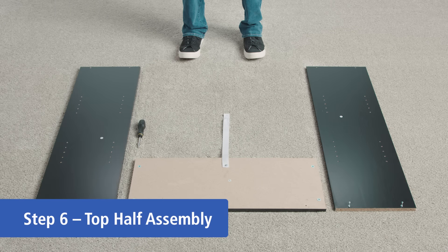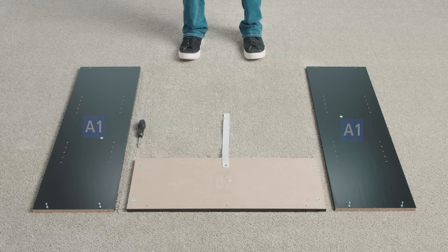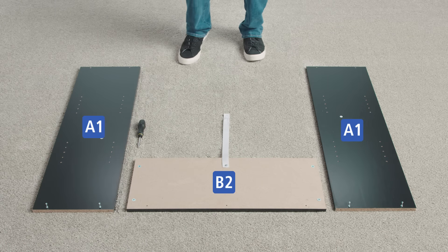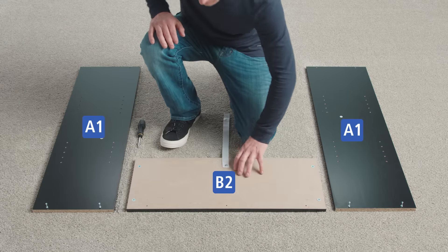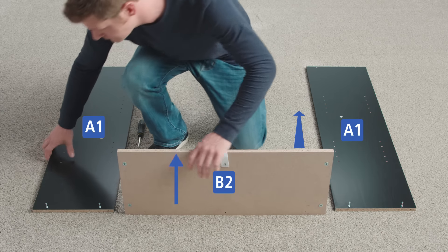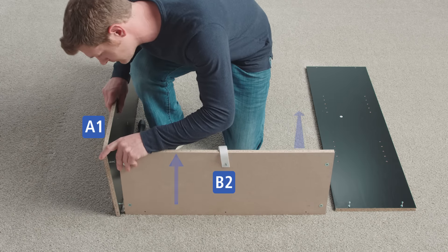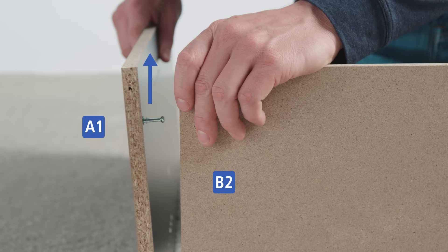You'll need a helper for the next step to ensure stability. Stand the top shelf on its side with the unfinished edge facing up and the finished surface facing in. Stand one of the A1 panels on its side with the unfinished edge facing up.